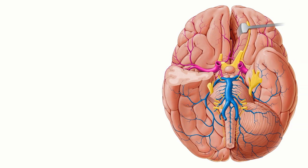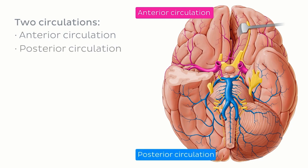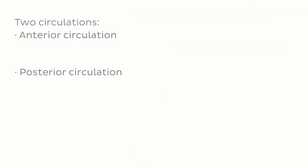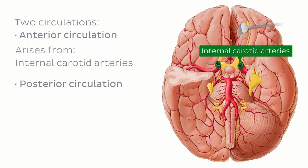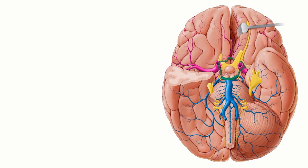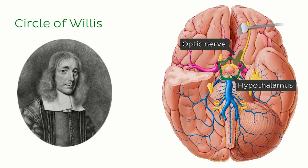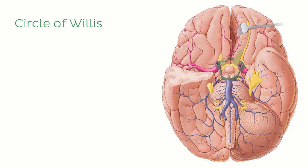As you can see, the arterial vasculature is highlighted in two different colors, and that's because Willis managed to break it down into two simpler circulations, namely the anterior circulation, which you can see highlighted in pink, and the posterior circulation, which you can see highlighted in blue. The main difference between these two circulations is their origins. The anterior circulation arises from the internal carotid arteries in the front, while the posterior circulation arises from the vertebral arteries. The two circulations ultimately anastomose, forming a circle around the hypothalamus and optic nerve at the base of the brain, and this circle came to be known as the Circle of Willis, honouring the contributions of Thomas Willis to the vascular anatomy of the brain.